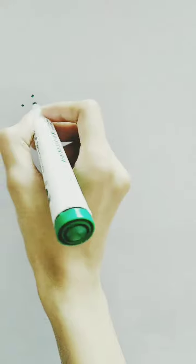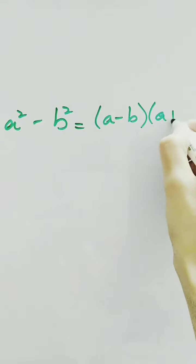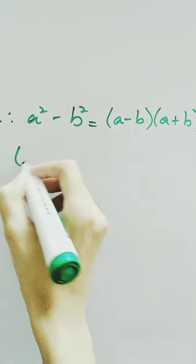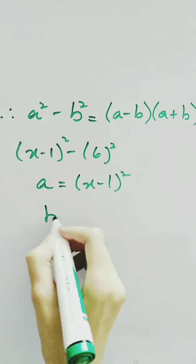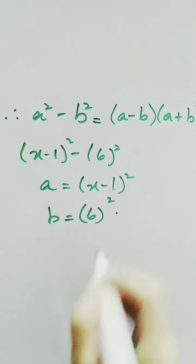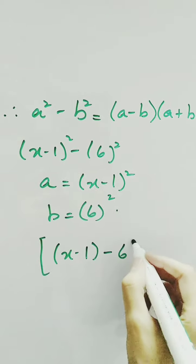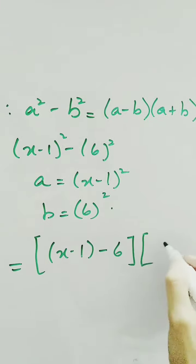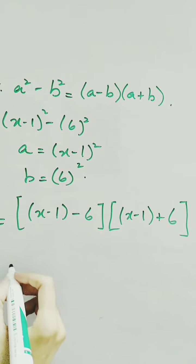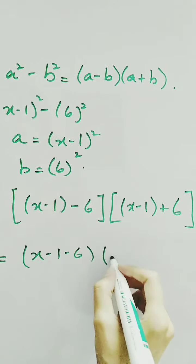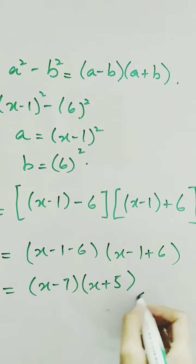We also know that we have another formula: a squared minus b squared is equivalent to (a minus b)(a plus b). So we can write this expression, which is (x minus 1) whole square minus 6 squared, where a equals (x minus 1) and b equals 6. So we write it as (x minus 1 minus 6) and (x minus 1 plus 6), giving us (x minus 7) and (x plus 5).